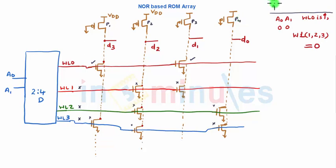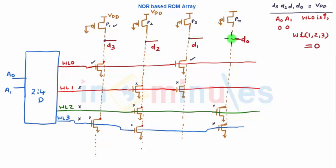The PMOS pull-ups P1, P2, P3, and P4 are all on because their inputs are grounded. So initially D3, D2, D1, and D0 are all equal to logic high — D3 would be VDD, D2 would be VDD, D1 would be VDD, and D0 would be VDD. So before Case 1, all four outputs were pulled towards VDD.